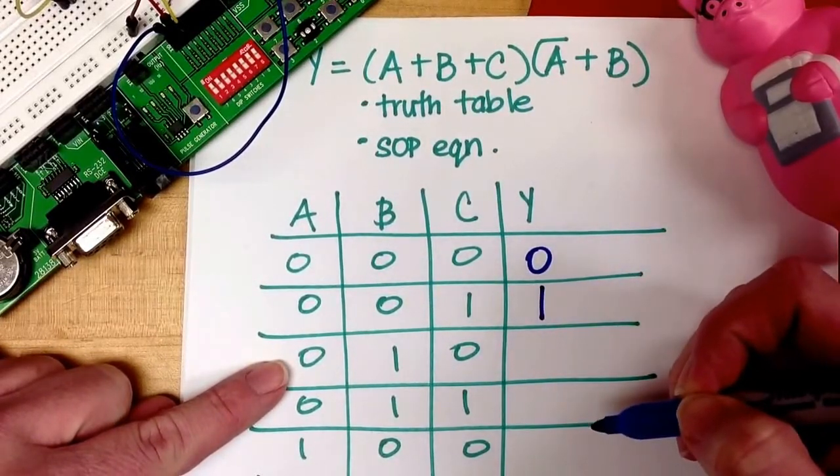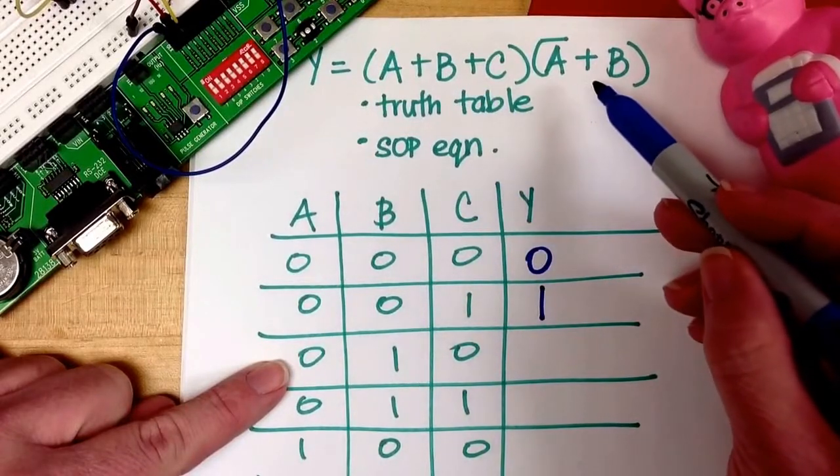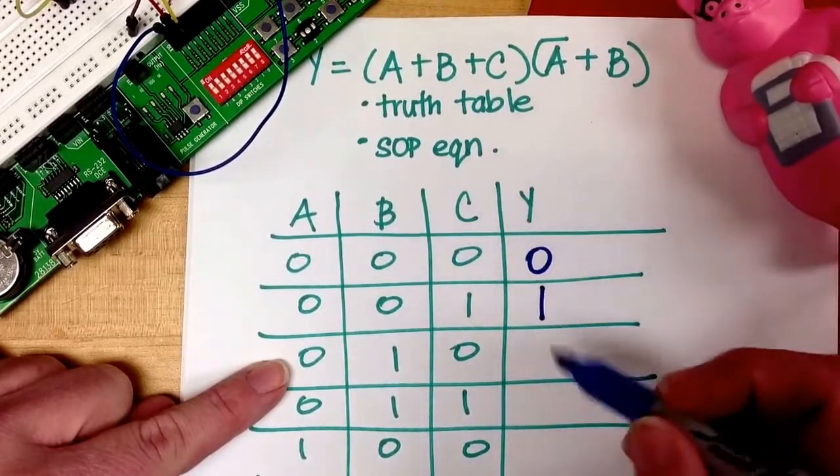I know that I have B. Do I have not A or do I have B? I actually have both, so that's a 1.